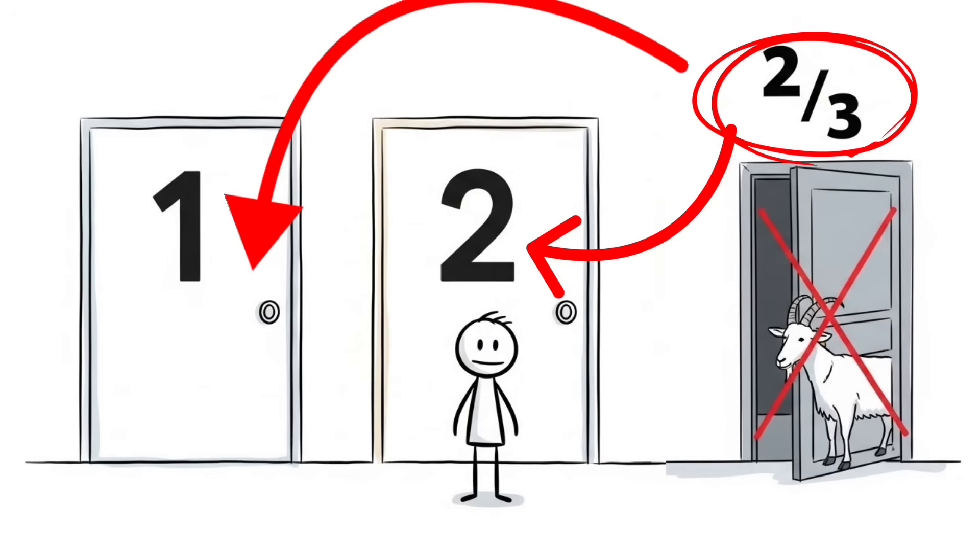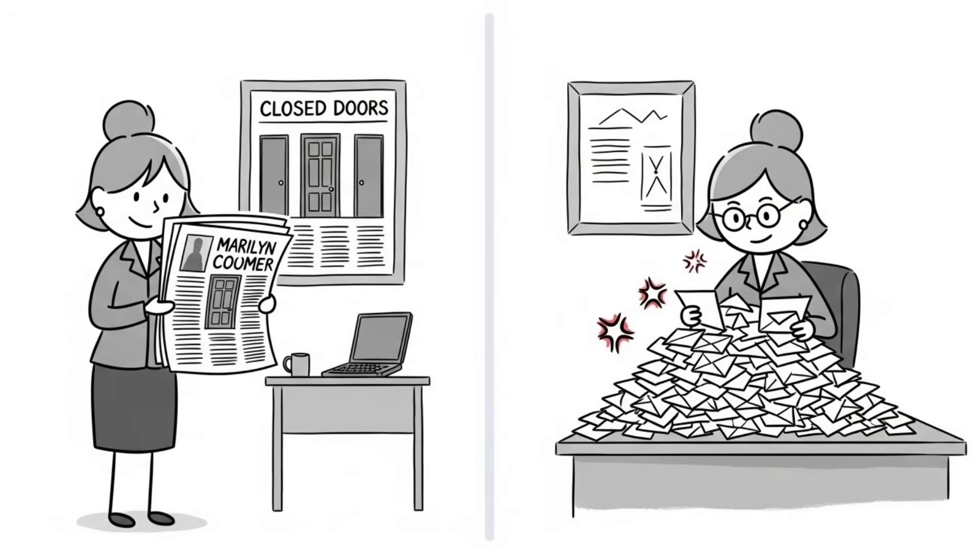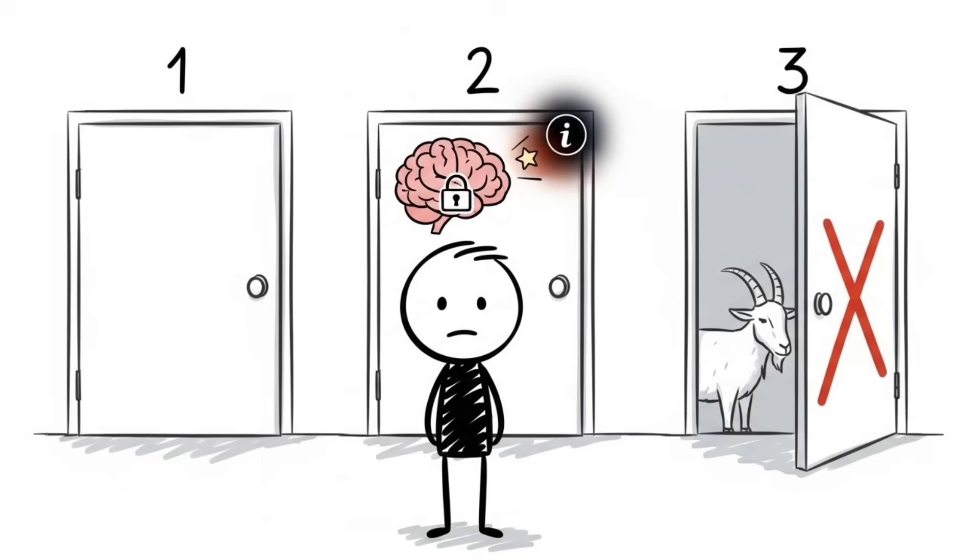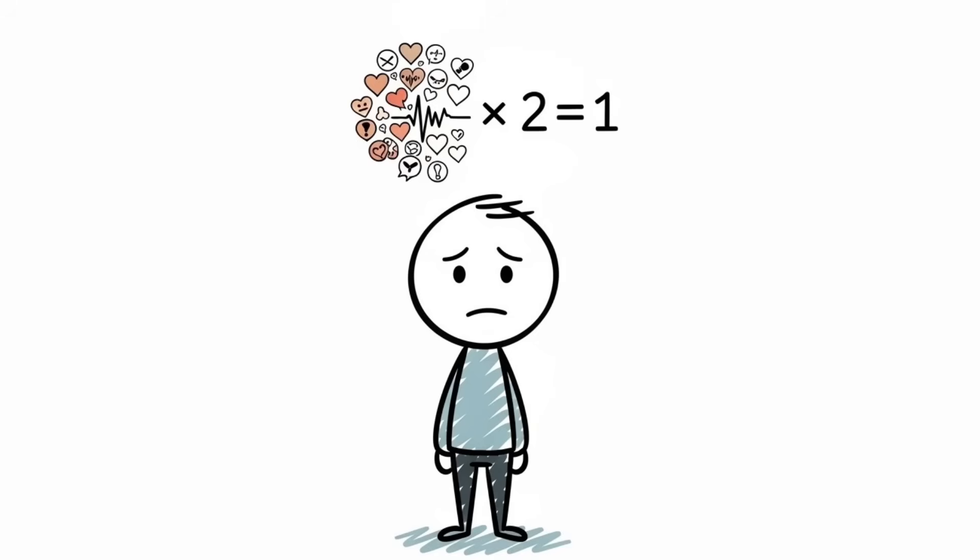If you picked a goat initially, which happened two-thirds of the time, switching wins. Marilyn Vosavant published this in her column in 1990 and received thousands of letters telling her she was wrong. She wasn't. Computer simulations confirm it. Bayesian probability proves it. And this proves that your brain can't update beliefs when new information arrives. Intuition doesn't do conditional probability. It does feelings. And feelings lose to math every time.